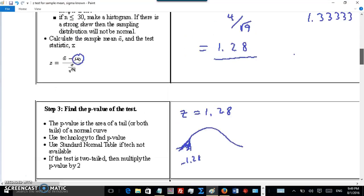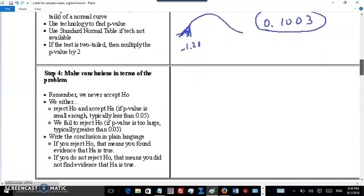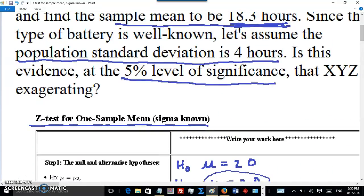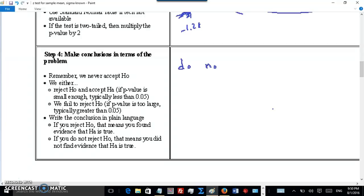So the p-value is 0.1003. That's a pretty high p-value. You could say that there's some weak evidence that the company is exaggerating, but it's not strong enough to convict, so to speak. On to step 4. We fail to reject because p-value is too large. It's more than 0.05 because the original question asked for the 5% level of significance.